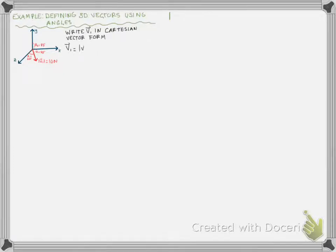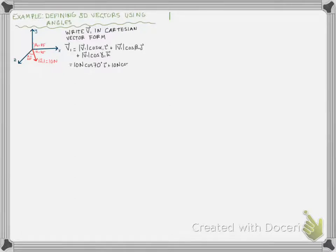That's going to have an x, a y, and a z component. So v1 is equal to the magnitude of v1 times cosine of alpha1 times i, plus the magnitude of v1 times cosine of beta1 times j, plus that magnitude times cosine of gamma1 times k. Plugging in what we know: 10 newtons times cosine 70° times i, plus 10 newtons times cosine 85° times j, plus 10 newtons times cosine 20° times k. Plugging this into our calculator, we get v1 equals 3.42i plus 0.87j plus 9.40k newtons.